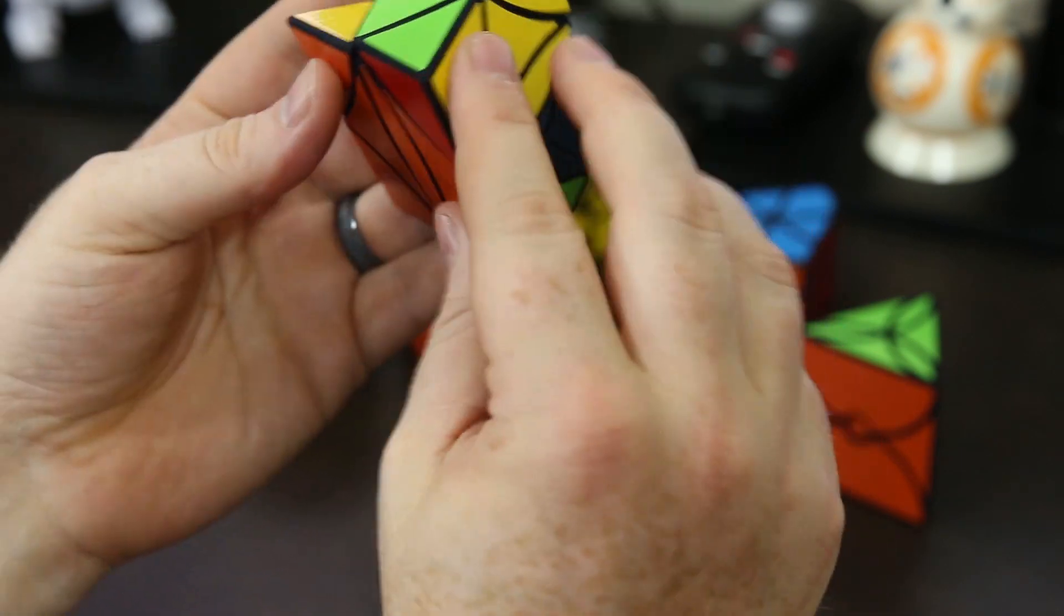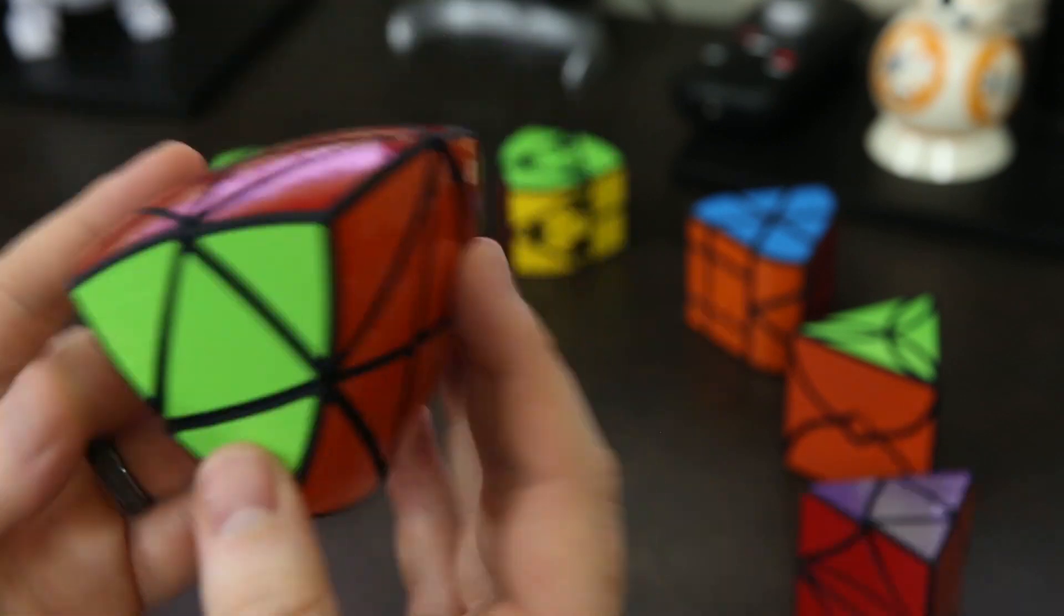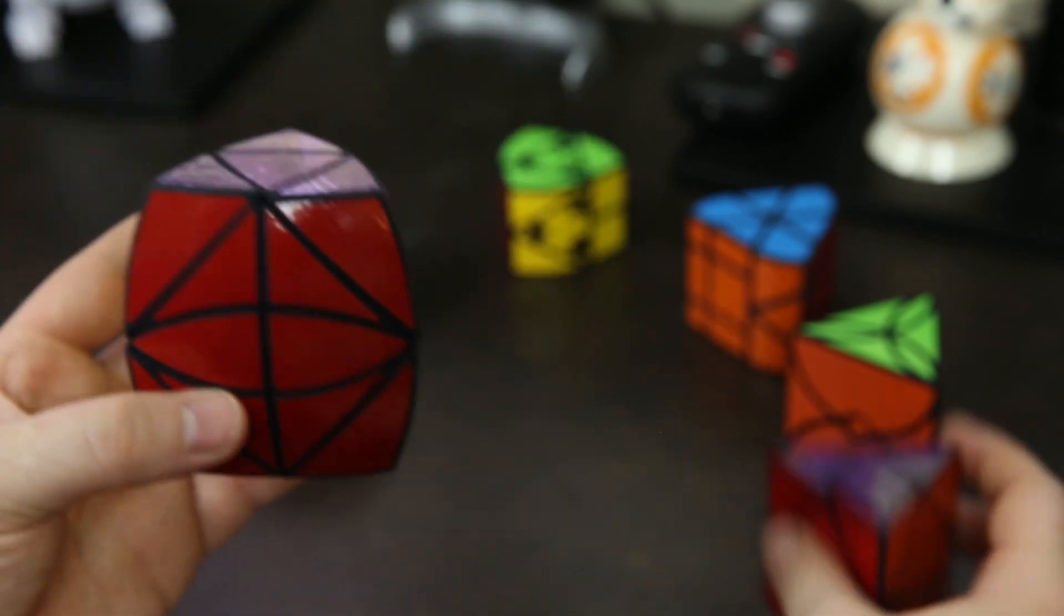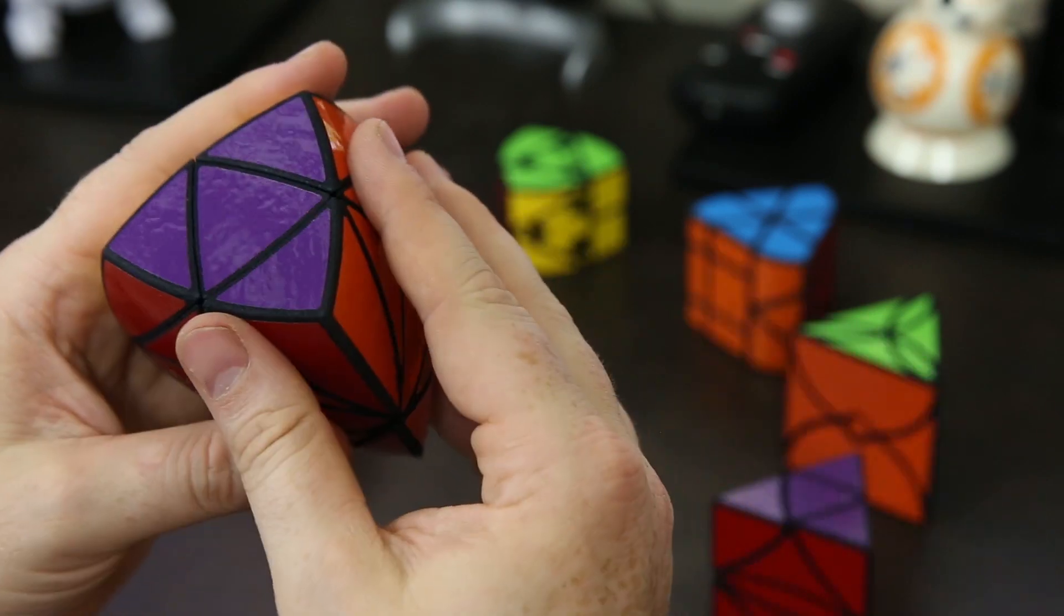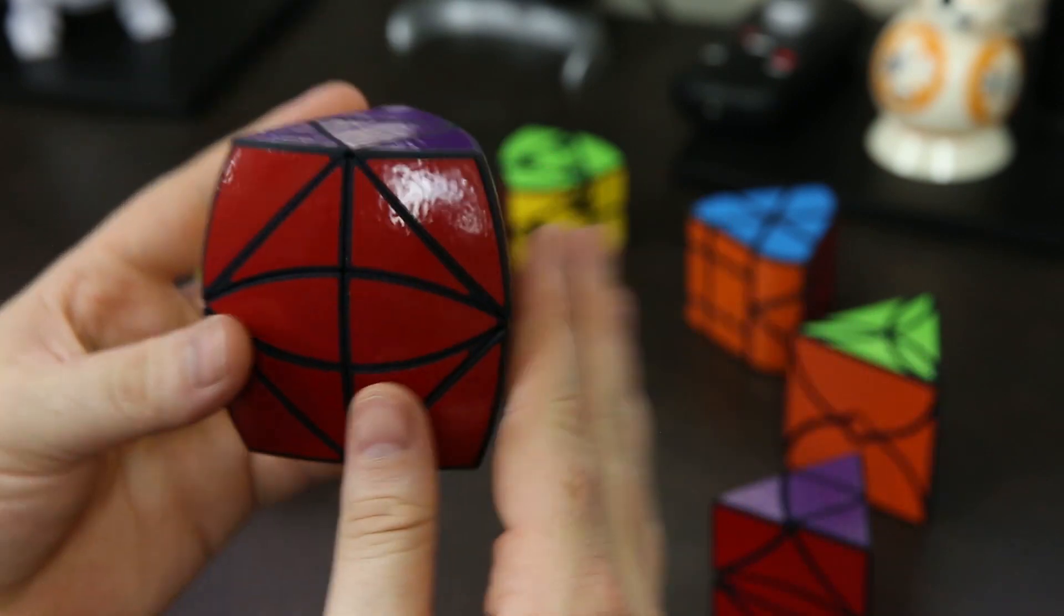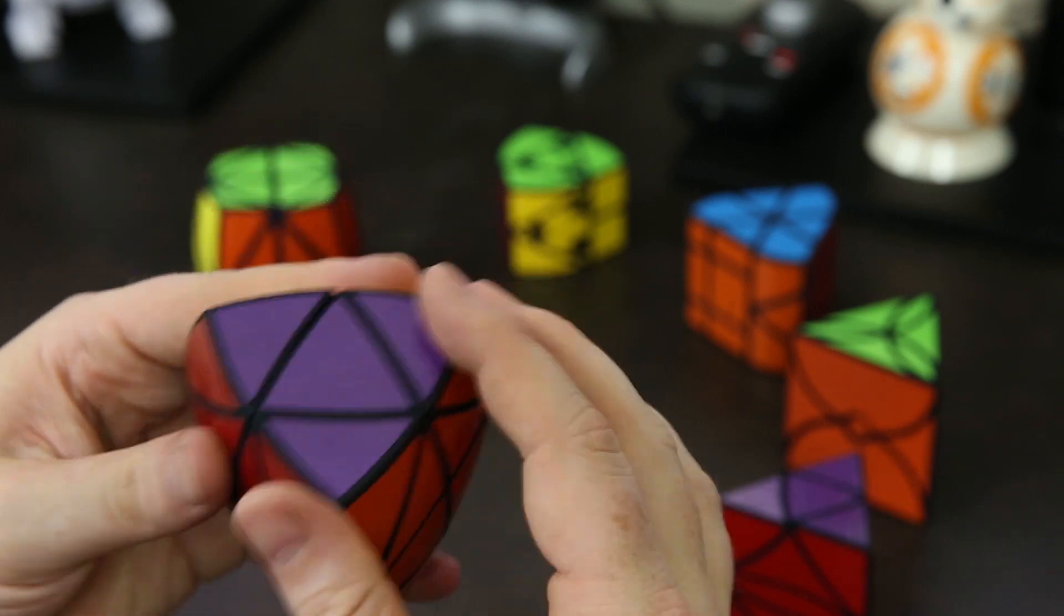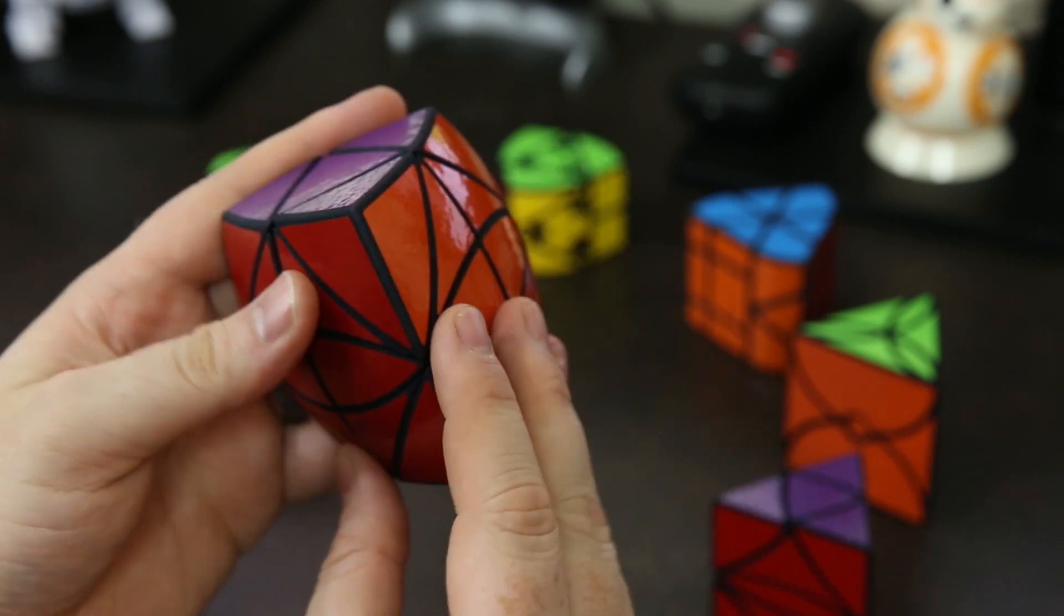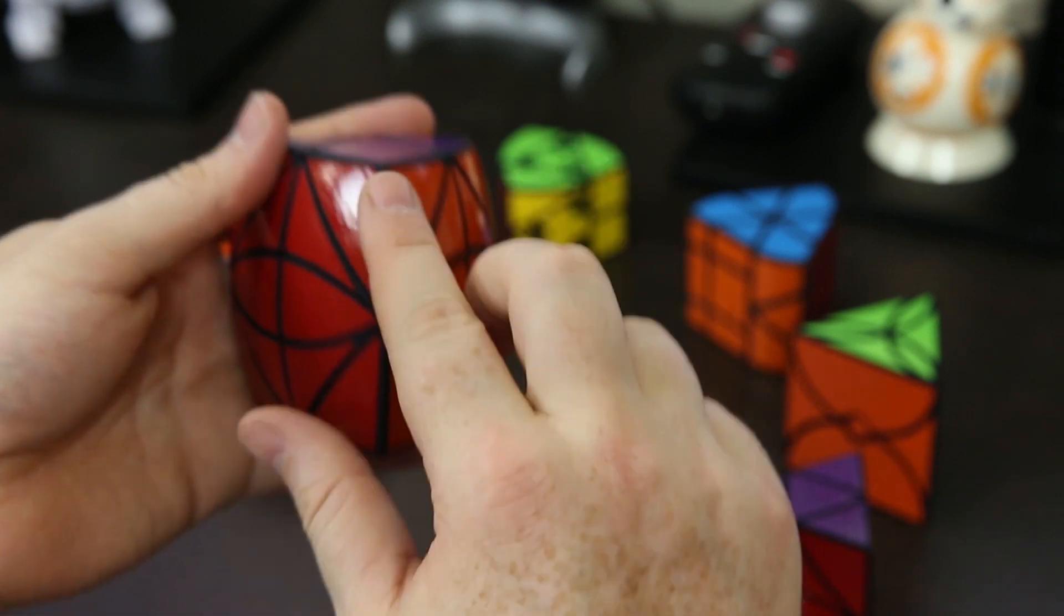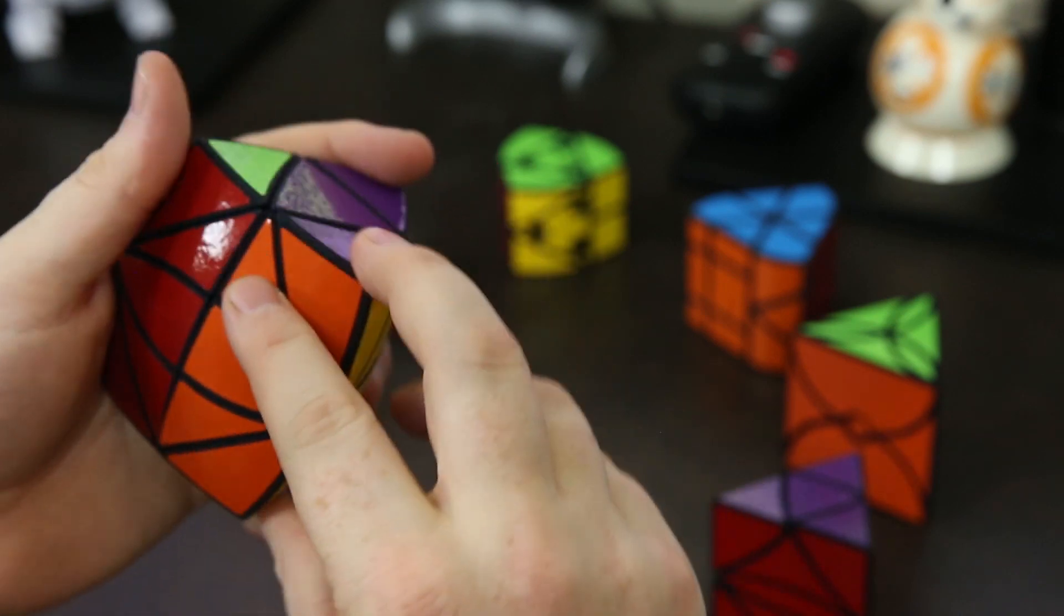Here we have the tri-copter 9. It's similar to the tri-copter 6 in that it's a triangular prism that's been pillowed. What's cool about this one is not only does it turn on the six axes on the top and bottom triangle, it also will turn on these long edges as well.